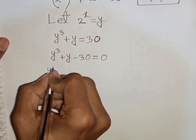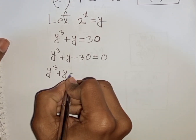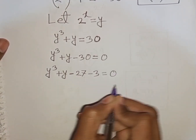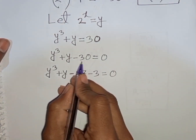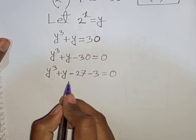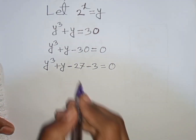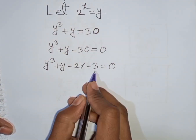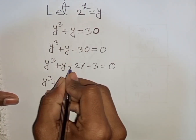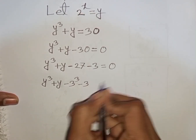Now y cubed plus y minus 30 can be written as y cubed minus 27 plus y minus 3, is equal to 0. The nearest cubic number to 30 is 27, so minus 30 can be written as minus 27 minus 3. And minus 27 is the same as minus 3 cubed.